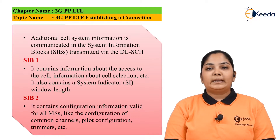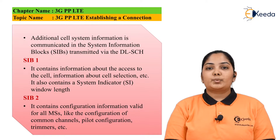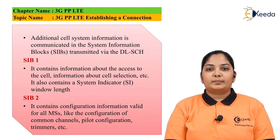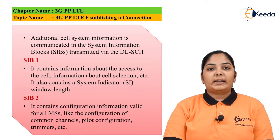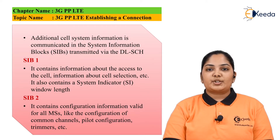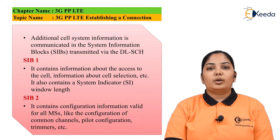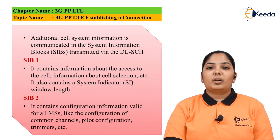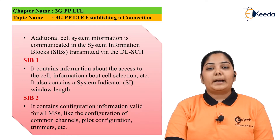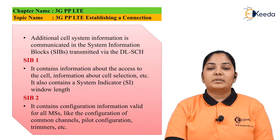This window length can be 1, 2, 5, 10, 15, 20, or 40 milliseconds. SIB 2 contains information regarding the configuration that is valid for all mobile stations, such as the configuration for common channels that are available, pilot channel configuration, timers, etc.